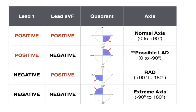To remember the angles: 0 to 90 degrees is normal axis; 0 to minus 90 is left axis deviation. This blue quadrant shows left axis deviation. Right axis deviation is from plus 90 to 180 degrees, and extreme axis is from minus 90 to 180 degrees.